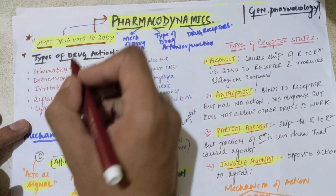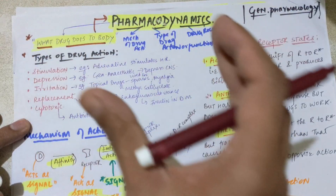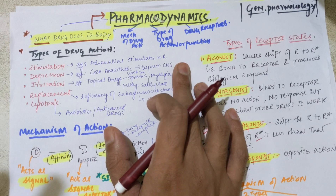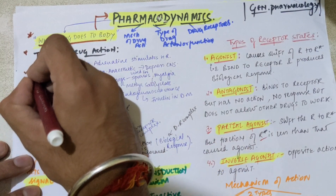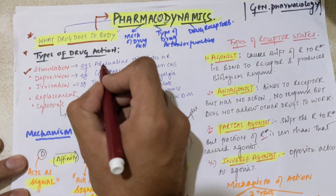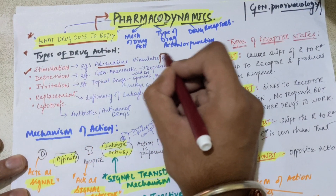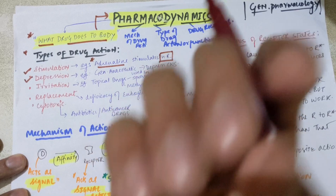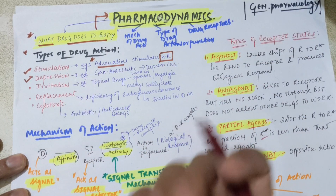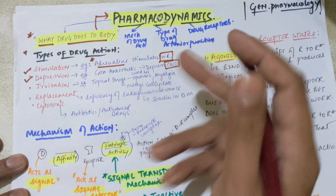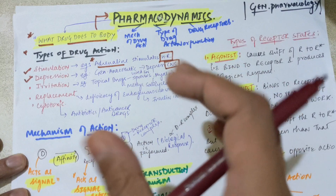The first concept is types of drug action — meaning what type of action a drug can do. First, we have stimulation. A drug can stimulate a receptor and increase its effect. For example, adrenaline can stimulate the heart rate. Then comes depression, meaning to inhibit or depress a function. For example, general anesthetic drugs depress the CNS activity — they depress the functions of the central nervous system.